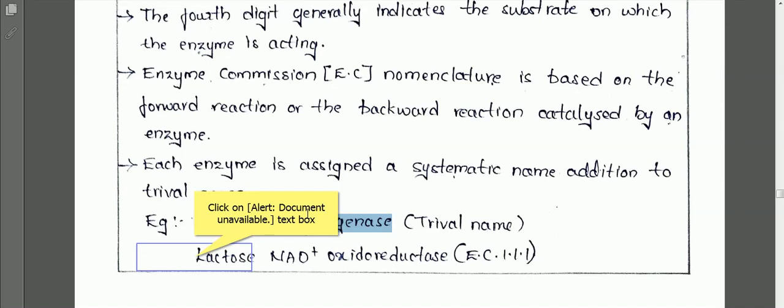These older naming systems were not properly systematic, and based on these kinds of naming we don't get any proper or complete information regarding the particular enzyme.